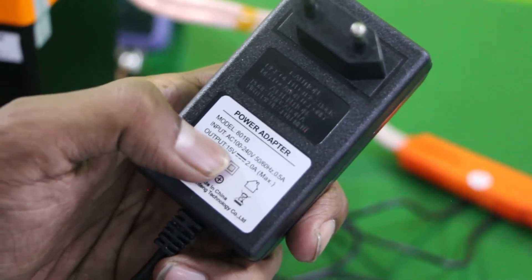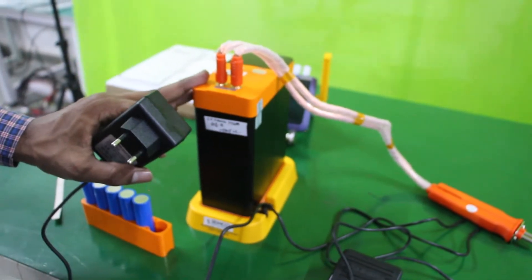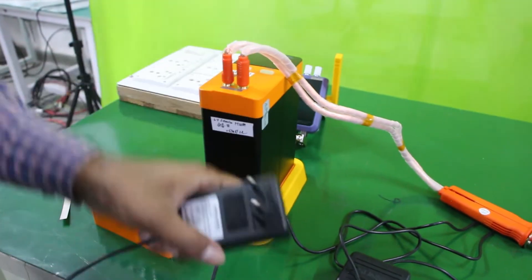The output will be 15V 2A max. This is the output for this Capacitor Energy Storage Precision Welding Machine.